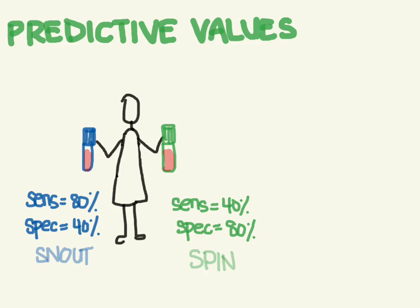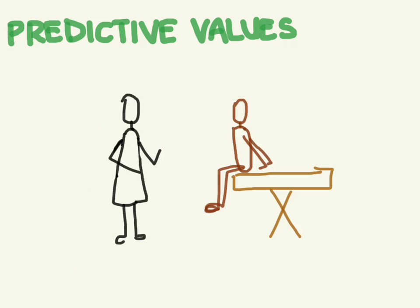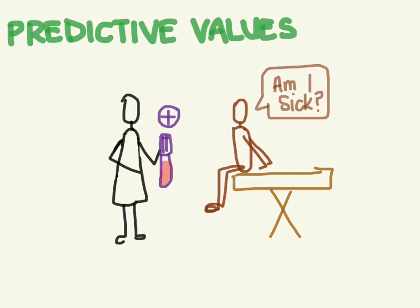But in clinical practice we're usually not comparing two different tests. Instead, we have a patient in front of us in whom we don't know whether they have the disease or not, and we have a test for which we do know the result. So how likely does a positive test mean that the patient has a disease? Or does a negative test mean that the patient is okay?